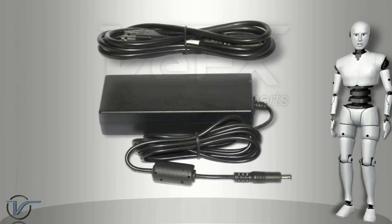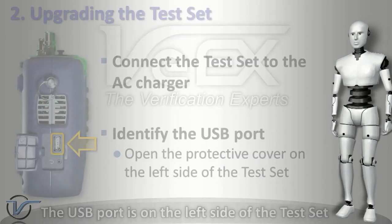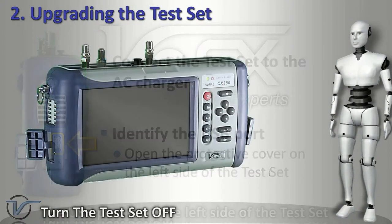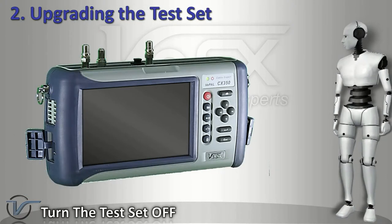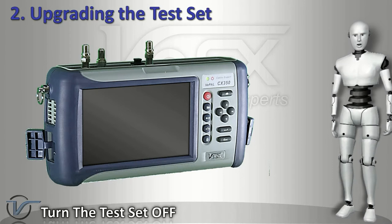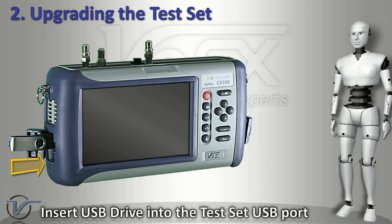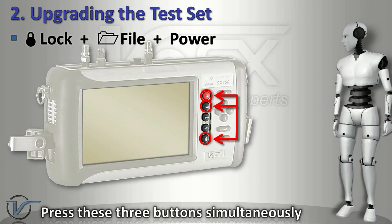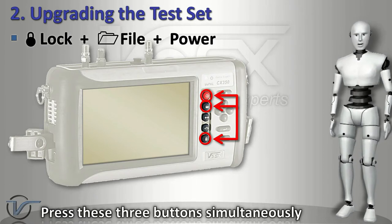Make sure the meter is connected to the AC charger. Identify the USB port on the left side of the test set and open the protective cover. Make sure the test set is powered off. Insert the USB memory stick. Press the lock, file, and power buttons simultaneously until you hear a beep.